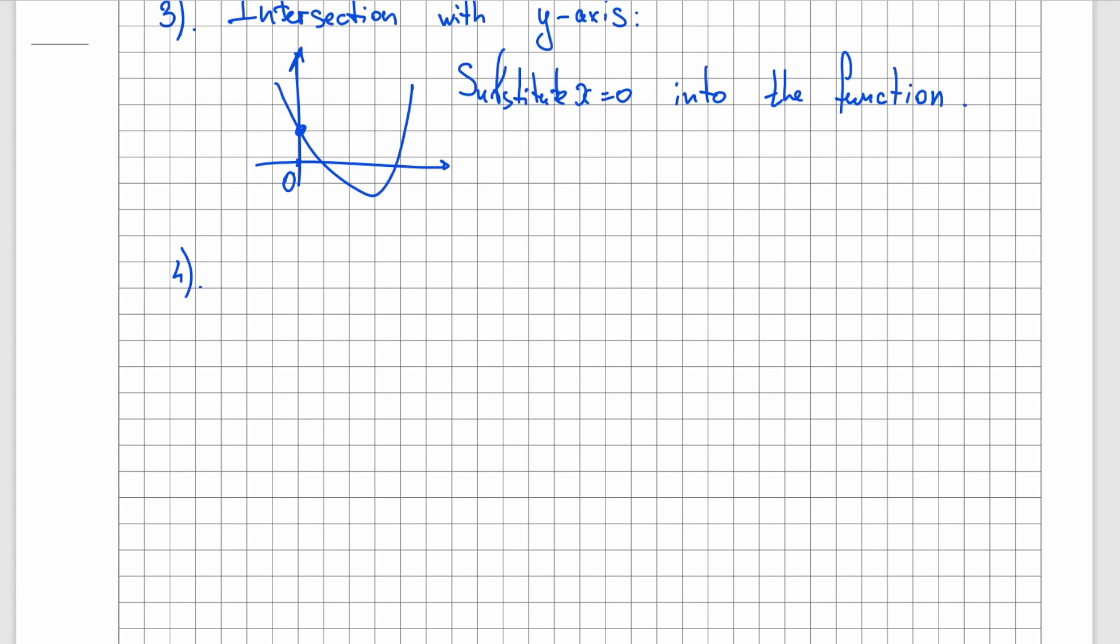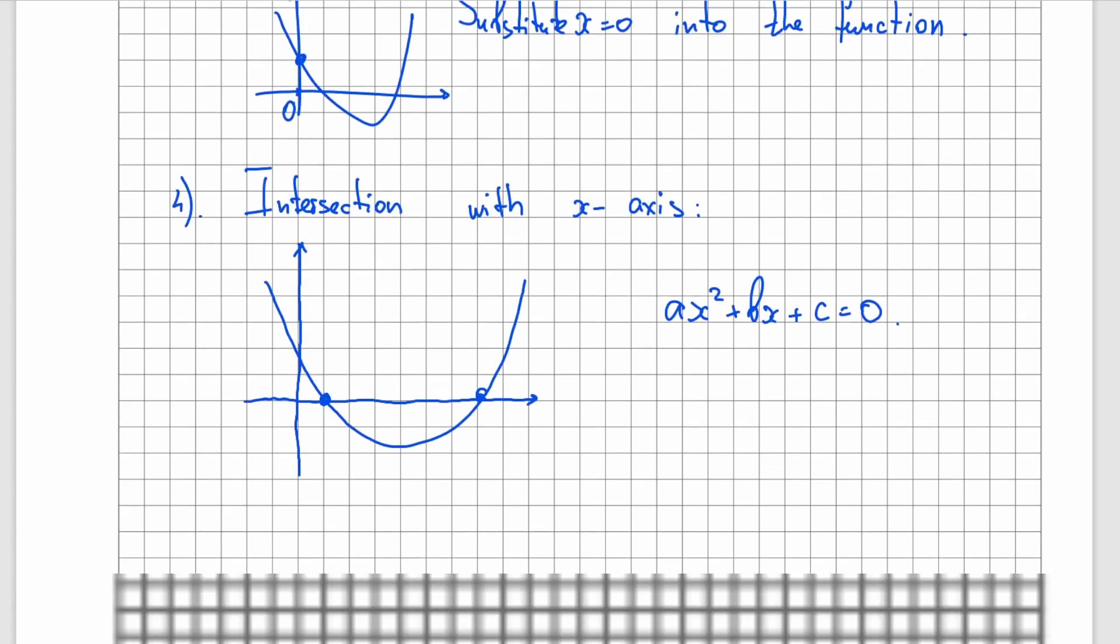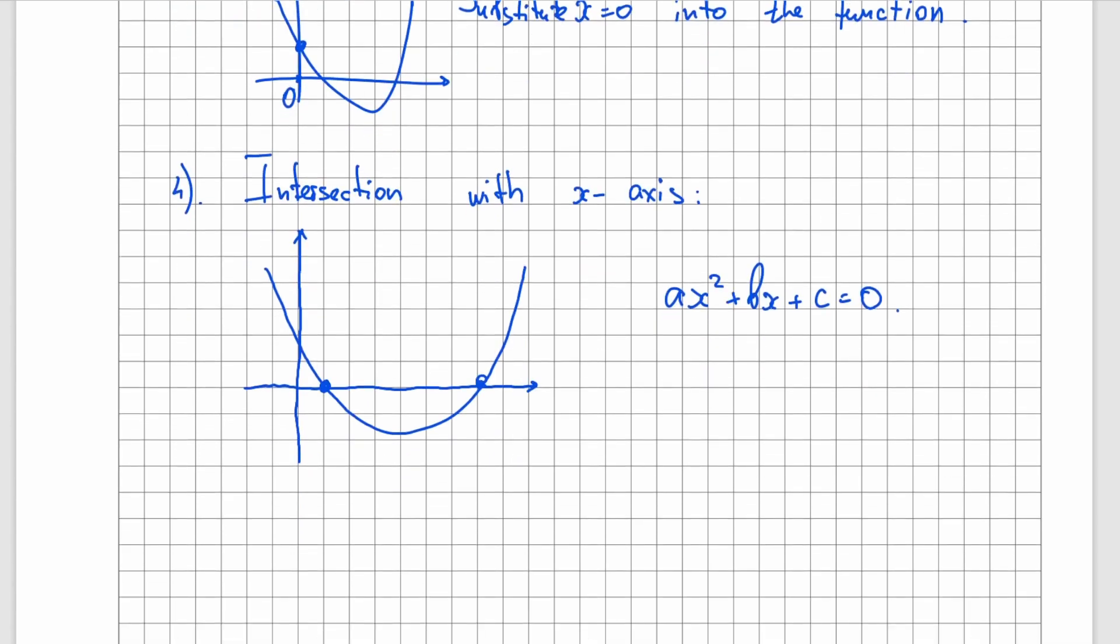And the last thing that we have to do is to find intersections with x-axis. And to do so, we will have to solve the equation, ax squared plus bx plus c equals to 0. And this is how we find all the key points of our graph.